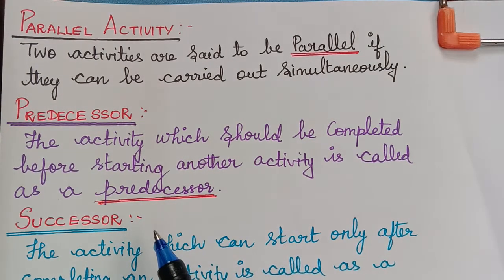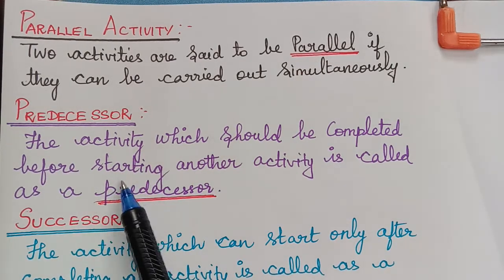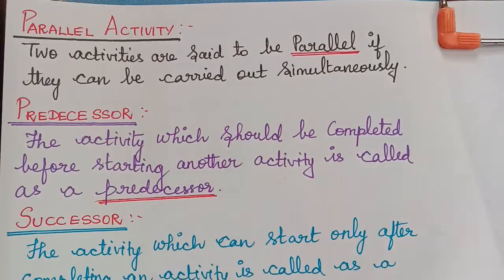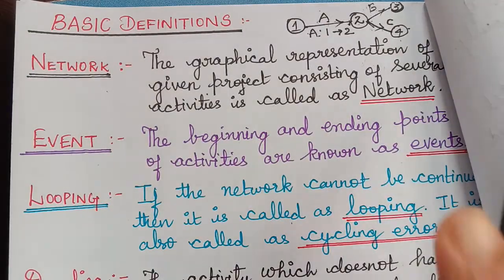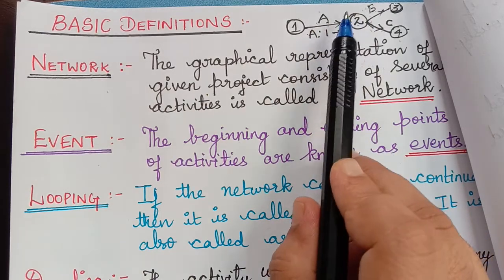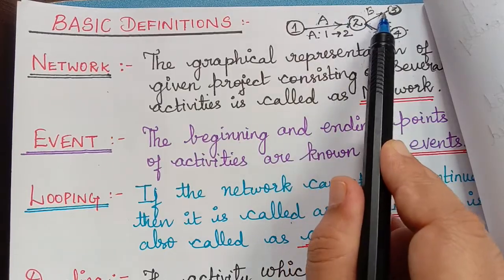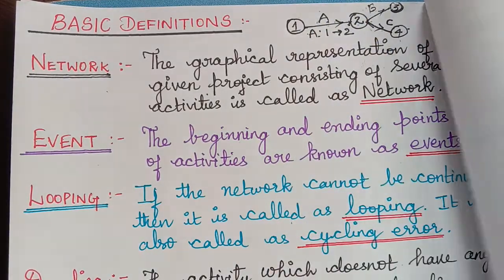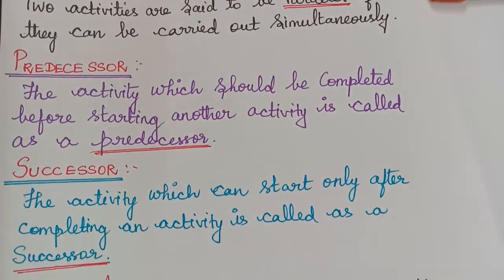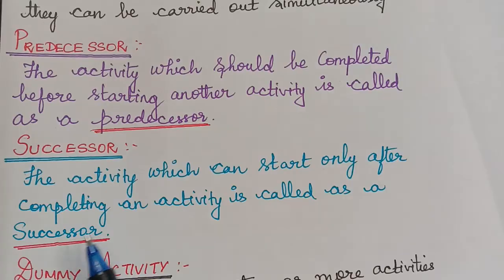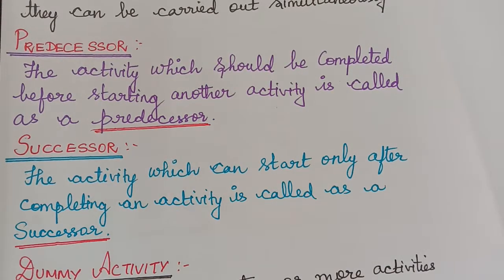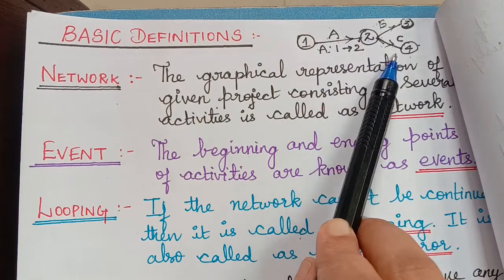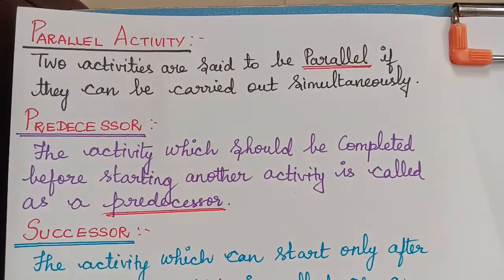Already we saw what predecessor and successor are, but here are the definitions. The activity which should be completed before starting another activity is called a predecessor. In this example, activity A has to be carried out first; after completing activity A, we carry out activities B and C, so activity A is the predecessor for B and C. Successor: the activity which can start only after completing another activity is called a successor. B and C can start only after completing activity A, so B and C are the successors of activity A.